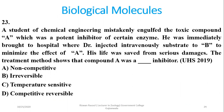Question 23: A student mistakenly ingested a toxic compound A, a potent inhibitor of a certain enzyme. The doctor injected the substrate intravenously to minimize the effect of compound A, and the patient recovered. This shows that compound A was a competitive and reversible inhibitor — by increasing substrate concentration, we reduce the impact of the inhibitor. The right option is delta.